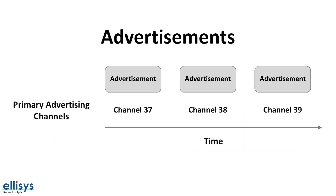So what are advertisements? Basically, advertisements are the packets that are sent out by a broadcaster or a device that wants to be discovered and then possibly connected to. They are sent out on the three primary advertising channels, which are 37, 38, and 39 — or possibly only a subset of them — and then repeat at a fixed interval and for a period of time.